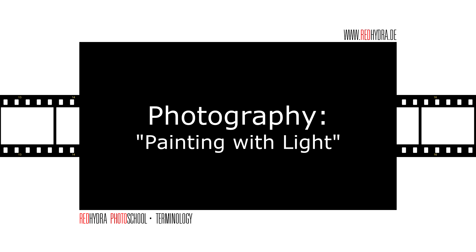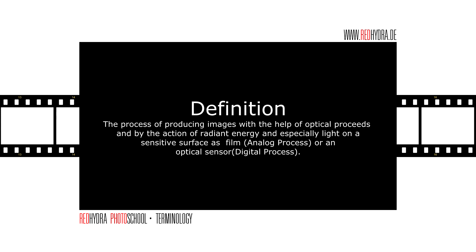There is a definition which is probably a little bit more accurate and official, and it is the following: the process of producing images with the help of optical processes and by the action of radiant energy — and especially light — on a surface such as film in the analog process, or an optical sensor in the digital process.